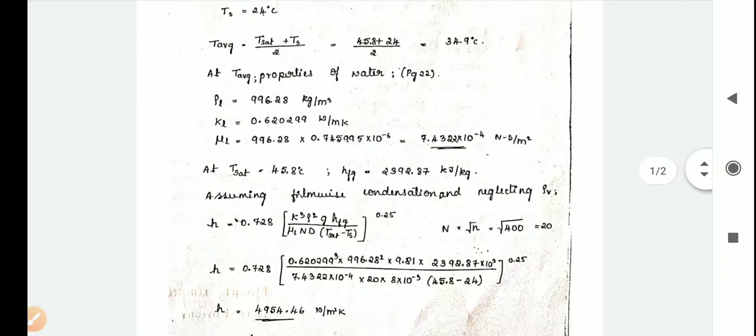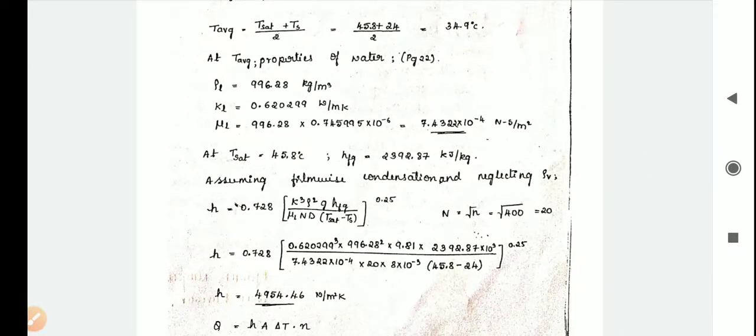Assume filmwise condensation and neglect the rho v value. The formula is h equals 0.728 times k cubed rho squared g times h fg divided by mu l times n times d times (T sat minus T s) whole raised to 0.25.